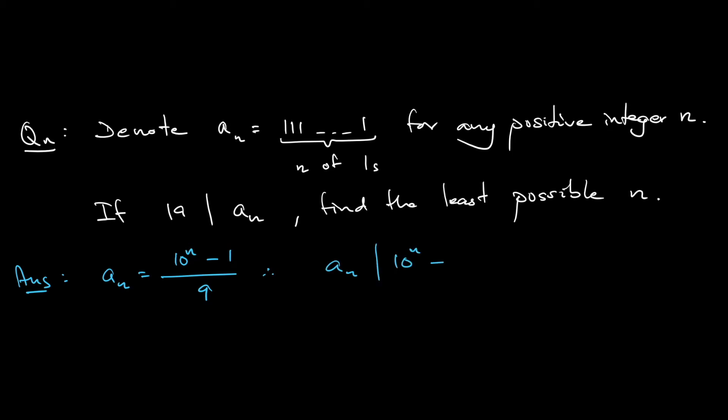The question gives you that 19 divides a_n, and now we have a_n divides 10^n - 1. So by the transitive property, 19 divides 10^n - 1.